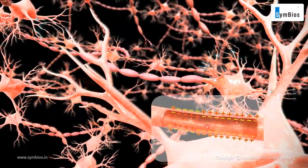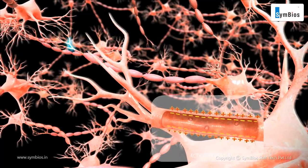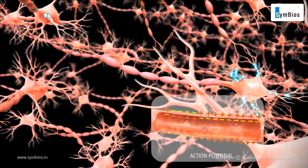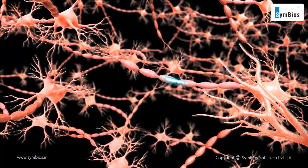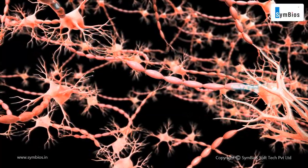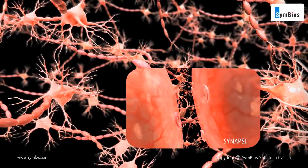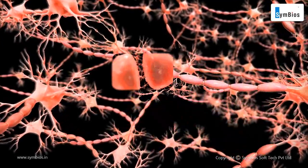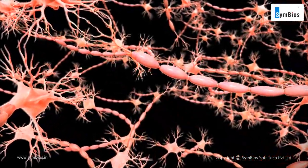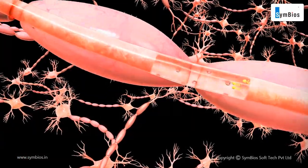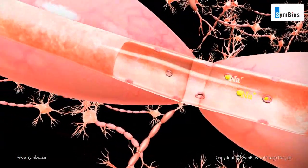Action potentials are the simple electrical currents that travel through the axon and reach the synapse. Synapse is the junction between two neurons. The signal must traverse the synapse to continue on its path through the nervous system.